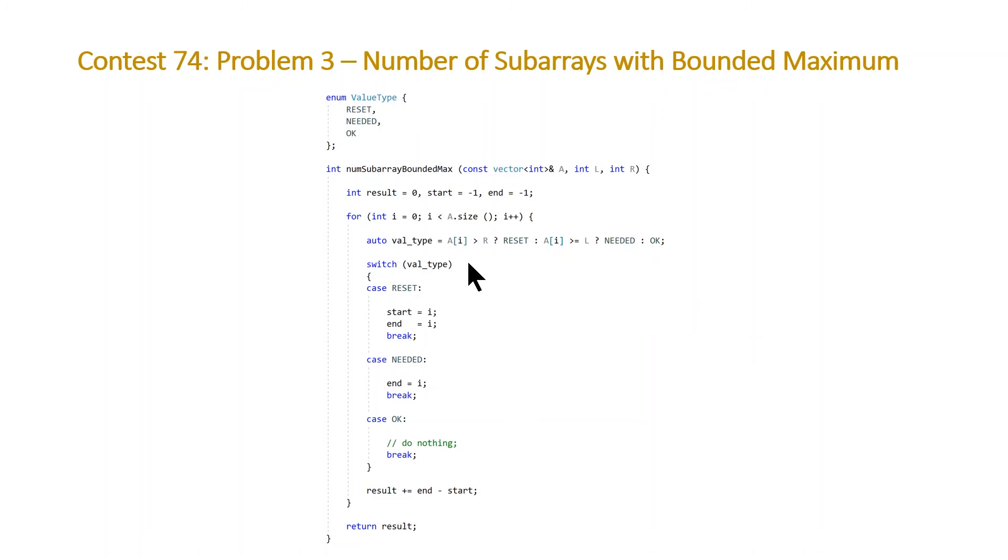Based on the value type, we're going to do exactly what we saw in our visual example. For reset values, we set them to the current index. For the needed value, we just set the end to the current index. For okay, we do nothing. For every single element, after we've done these modifications to start and end, we will do a plus equals to result from the difference of end and start.